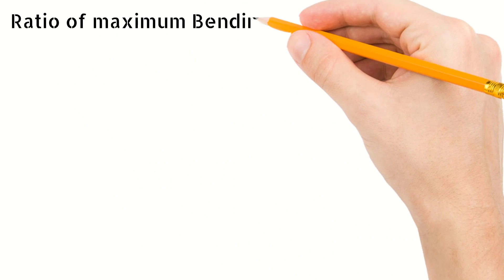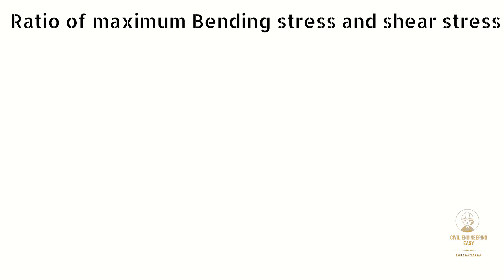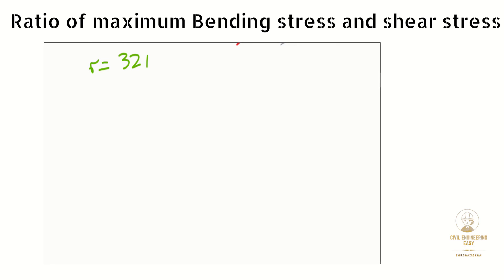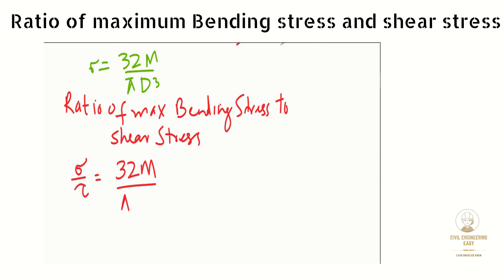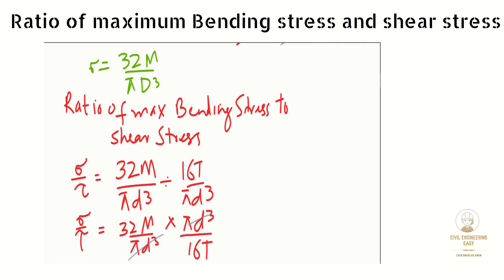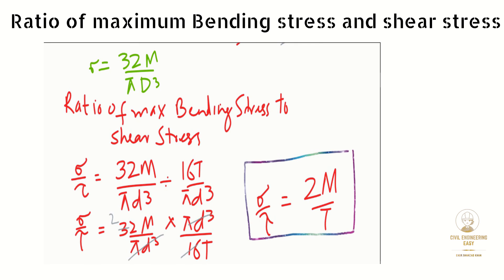Also, we have the bending stress equation: σ_B = 32M/(πD³). Now let's calculate the ratio of the maximum bending stress to maximum shear stress: (32M / πD³) divided by (16T / πD³). By simplification, the ratio of maximum bending stress to shear stress equals 2M/T. That was all about the shaft design.